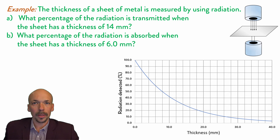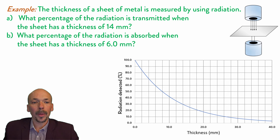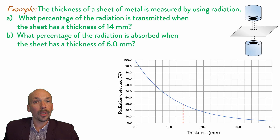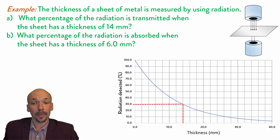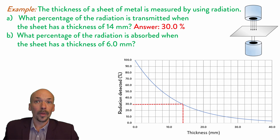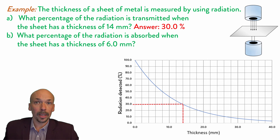Let's look at the first question. We have to determine what percentage of the radiation is transmitted when the sheet has a thickness of 14 mm. We look at the graph and read at 14 mm that 30% of the radiation is detected by the sensor. So 30% is transmitted — our answer is 30%. The other 70% has been absorbed by the sheet of metal.